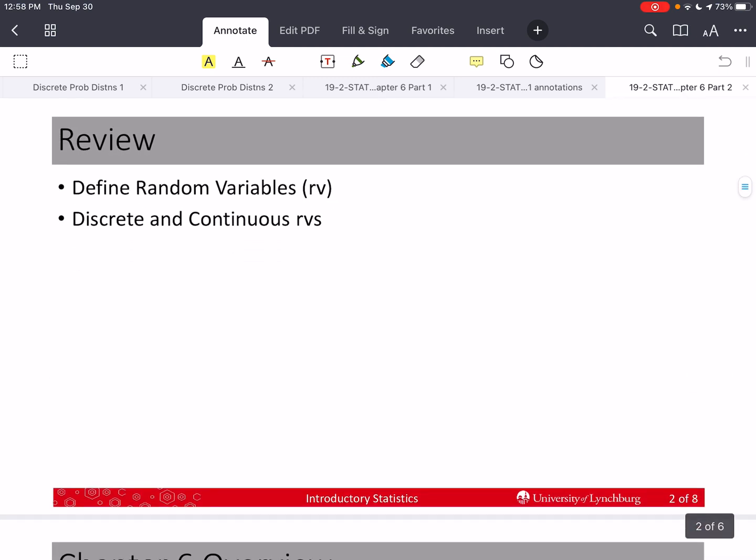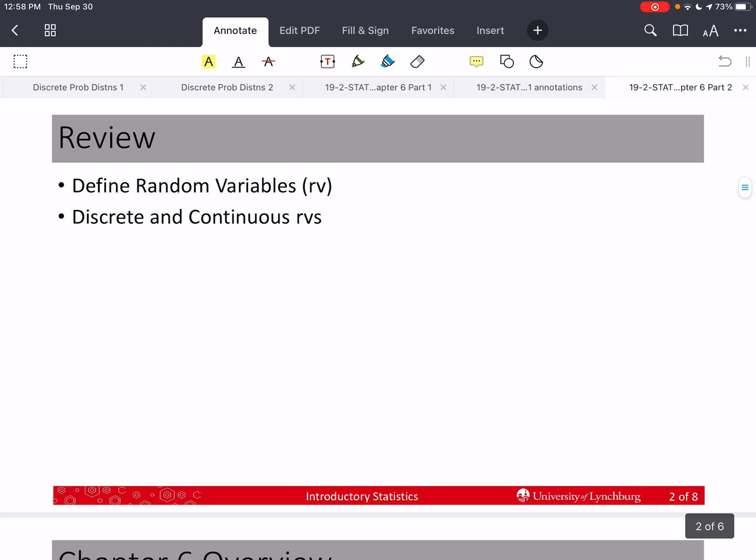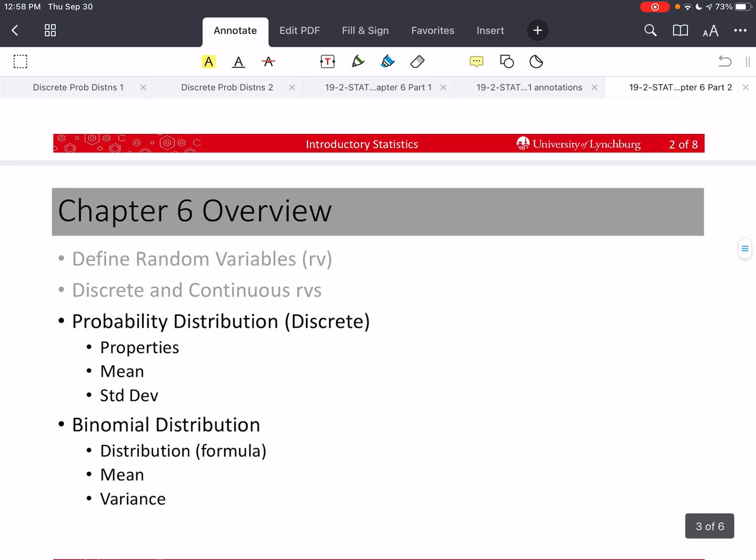In the previous video, we defined random variables. Then we talked about discrete and continuous random variables and gave some examples. In this video, we're going to discuss probability distributions, specifically discrete probability distributions, learn their properties, how to find the mean, and their standard deviation.